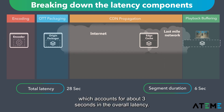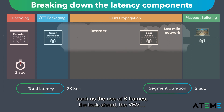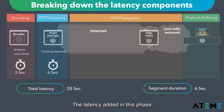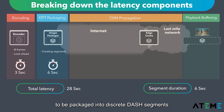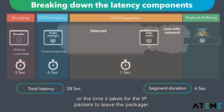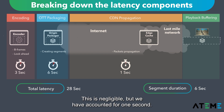First, the encoding stage, which accounts for about three seconds in the overall latency. This is mainly related to encoding parameters such as the use of B-frames, the lookahead, and the VBV. Next, OTT packaging — the creation of the segments themselves. The latency added in this phase is the time it takes for the continuous stream coming from the encoder to be packaged into discrete DASH segments and made available to the CDN, so it is directly related to the segment duration, which in our case is six seconds. Then comes CDN propagation — the time it takes for IP packets to leave the packager, transit through the internet routers, and reach the end-user devices. This is usually negligible, but we have accounted for about one second here.